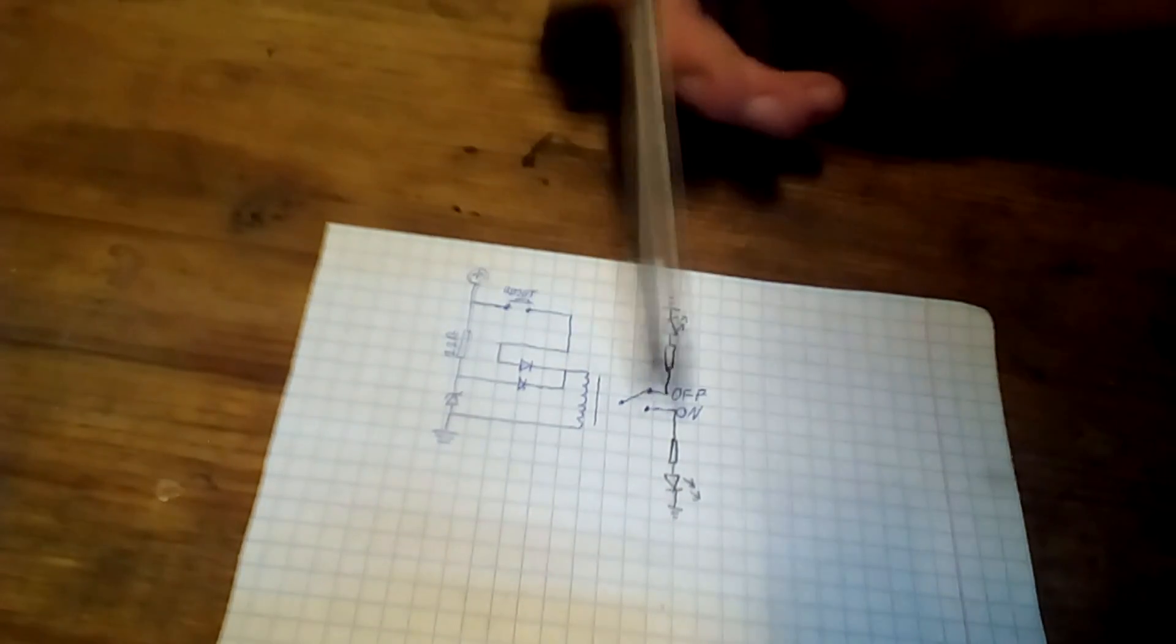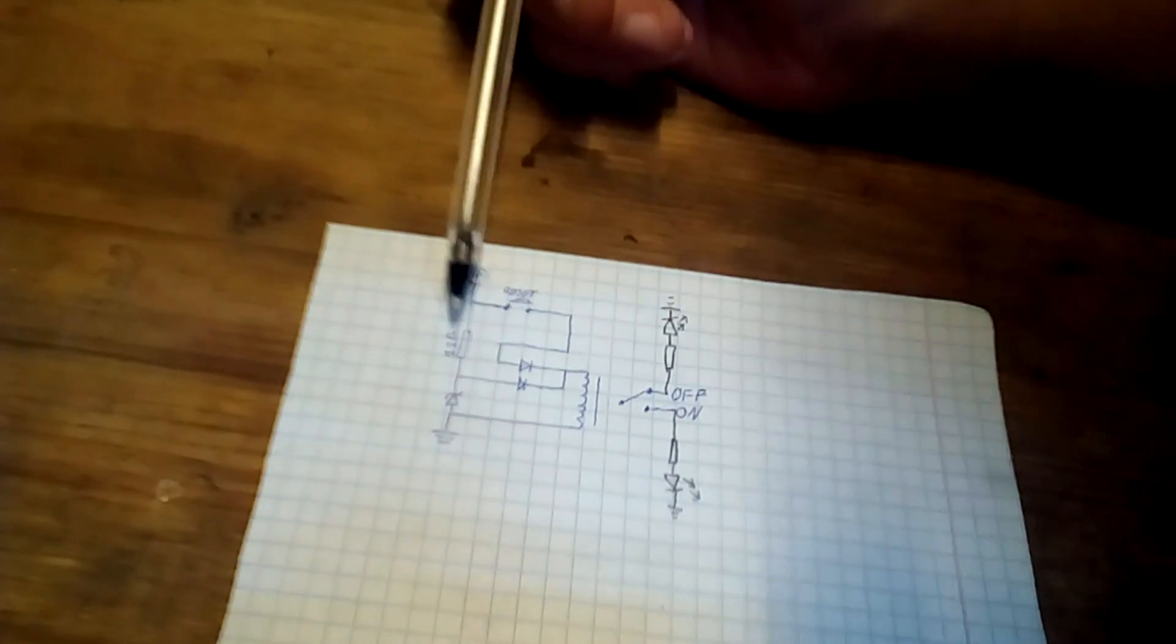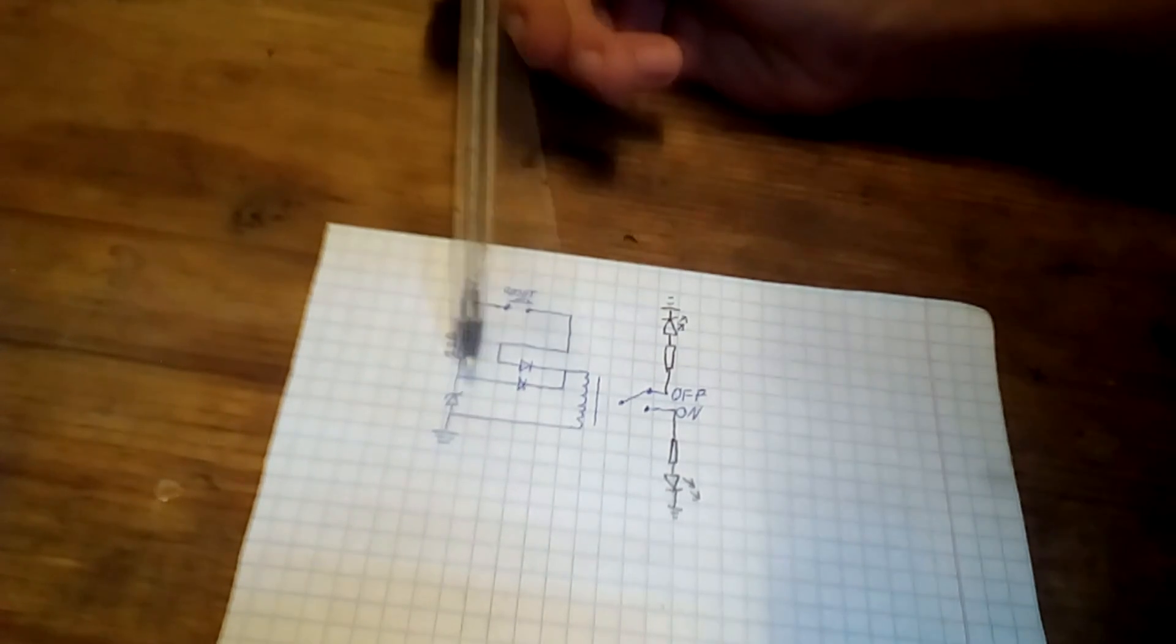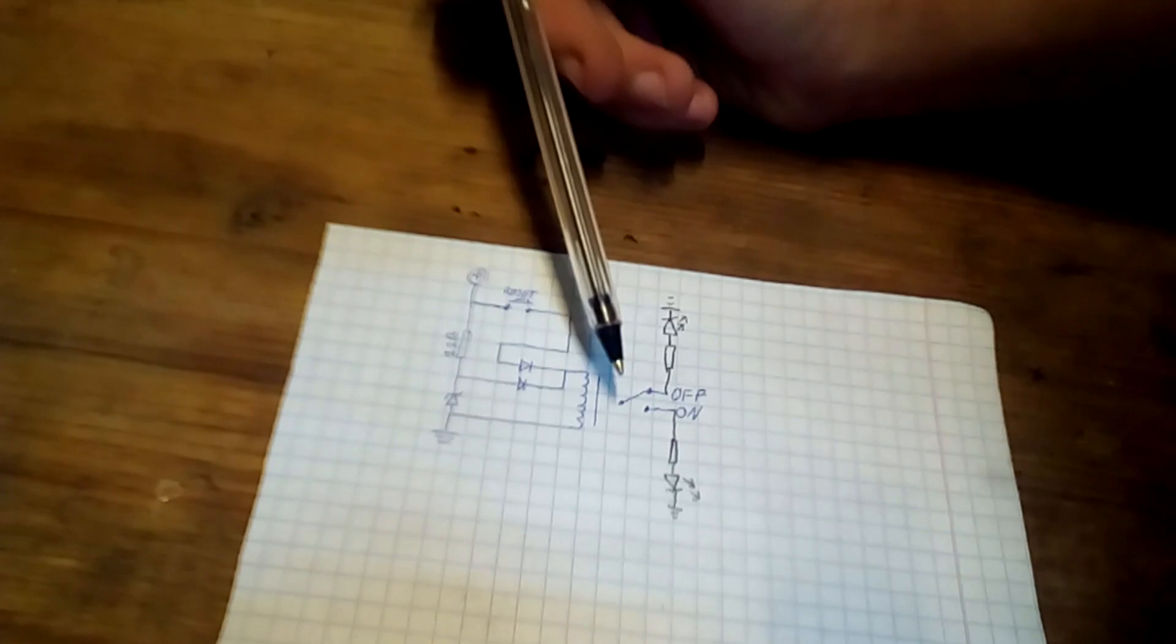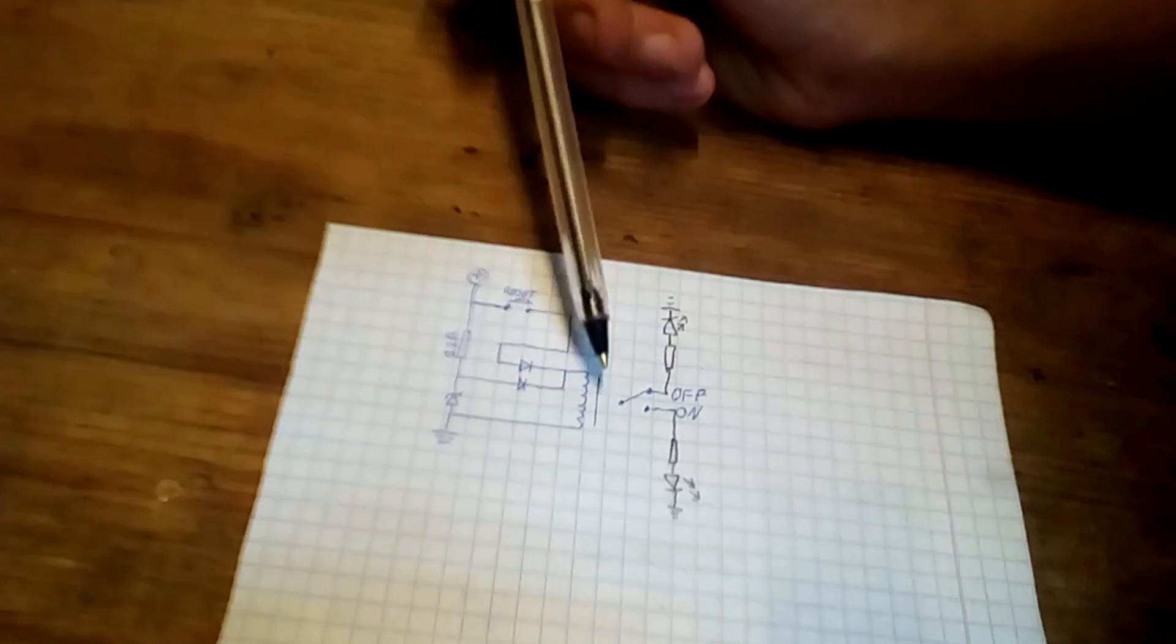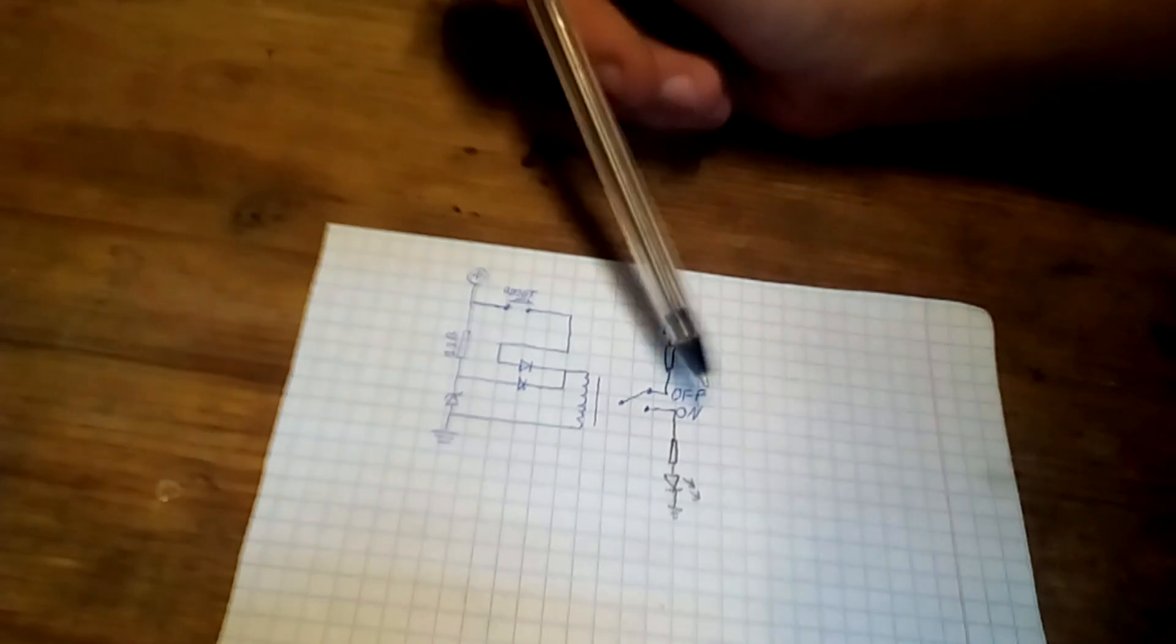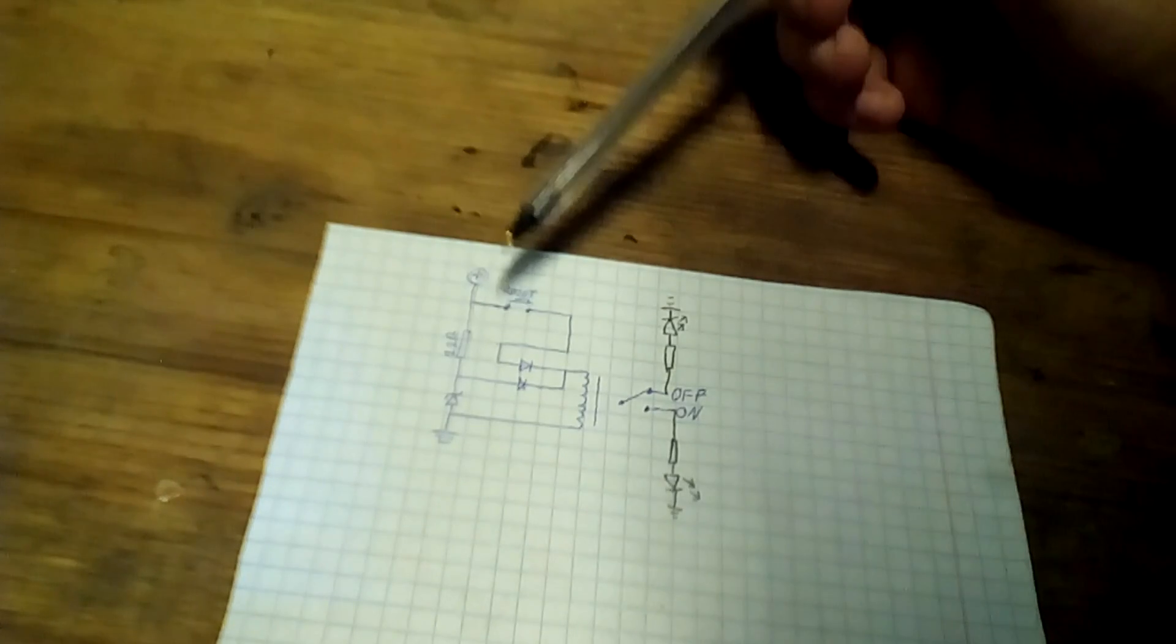But when you short the power supply, the voltage drop occurs and there is not enough voltage to keep the contacts closed. So it opens and you got no more power in the output. It works from 12 volts.